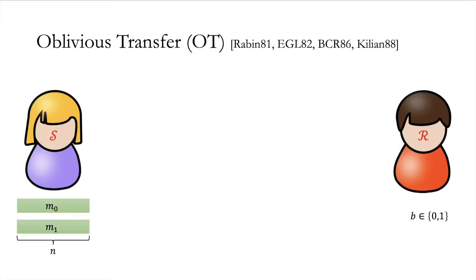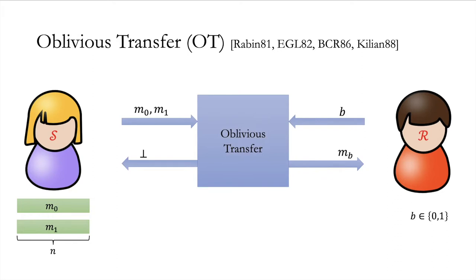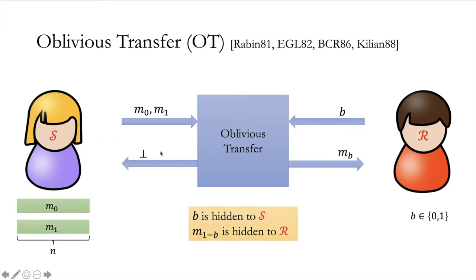We start with the problem of oblivious transfer, or OT for short, which is a protocol between two parties we call sender and receiver. The sender has two messages M0 and M1, each of length n, and the receiver has a single choice bit B as input. From the OT protocol, the receiver will get one of the two messages depending on his choice bit, namely Mb, and the sender gets nothing. The security guarantee is that the choice bit B is hidden to the sender, and the other message M_{1-B} is hidden to the receiver.